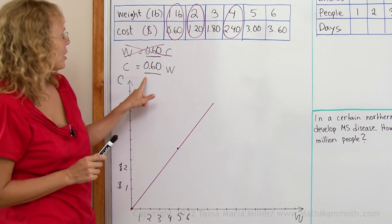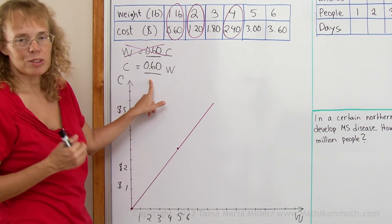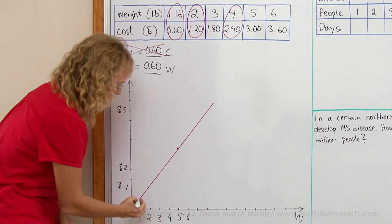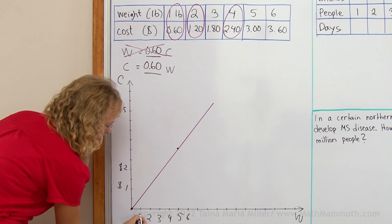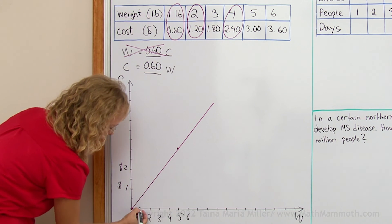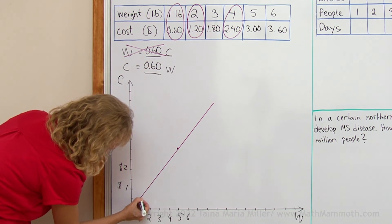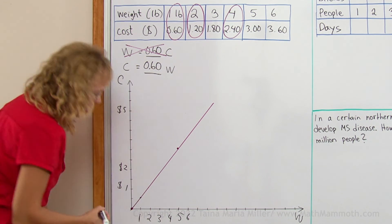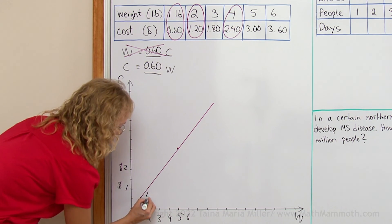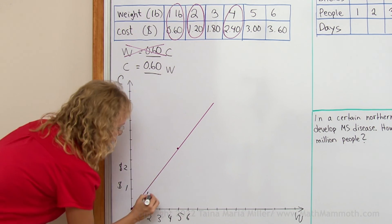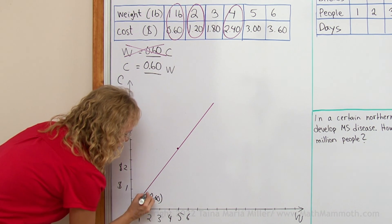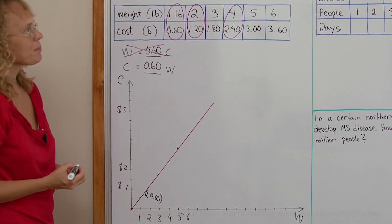I wanted to point out that 0.6 is the slope. If you take 1 on the weight axis and go up, this point will have the coordinates of 1 and the slope — which is also the unit rate.